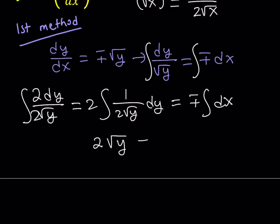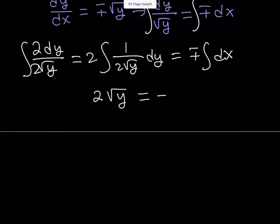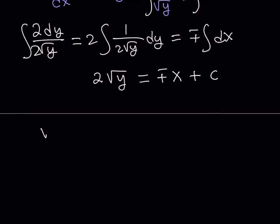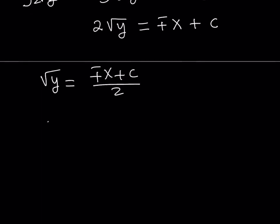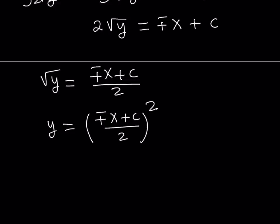The integral of 1 over 2 root y is square root of y, so it's going to be 2 root y equals plus or minus x, and of course I have to include my constant. From here we can solve for y — let's divide both sides by 2, then square both sides to get the y value. When you square, the plus or minus sign doesn't matter because even if it's negative it's going to be positive at the end. So we square both sides and get y as the solution. That's the end of the first method.